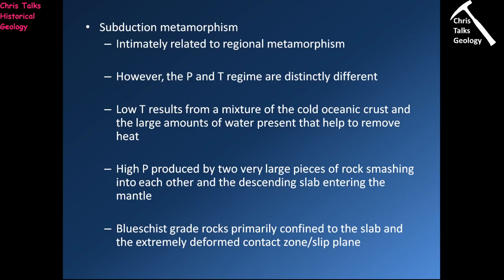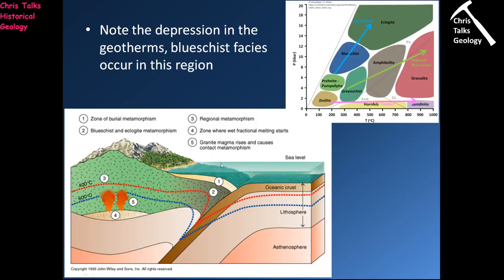This helps keep the subduction zone itself artificially cool, giving you a rather weird set of conditions: very, very high pressures but geologically speaking, surprisingly low temperatures. This produces an interesting selection of minerals. In terms of where blueschist facies rocks occur - the most common type of subduction zone related rock - they form in the subducting oceanic crust and at the contact between it and the continental crust, as shown in the diagram.